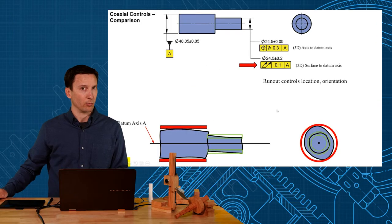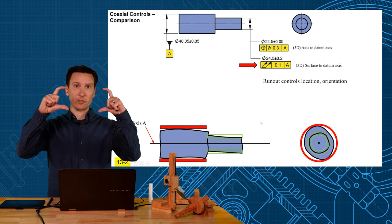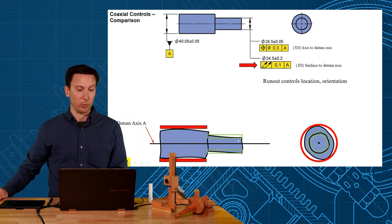It also controls orientation relative to datum, because the surface could be tilted within that tolerance zone of 0.1 as well.